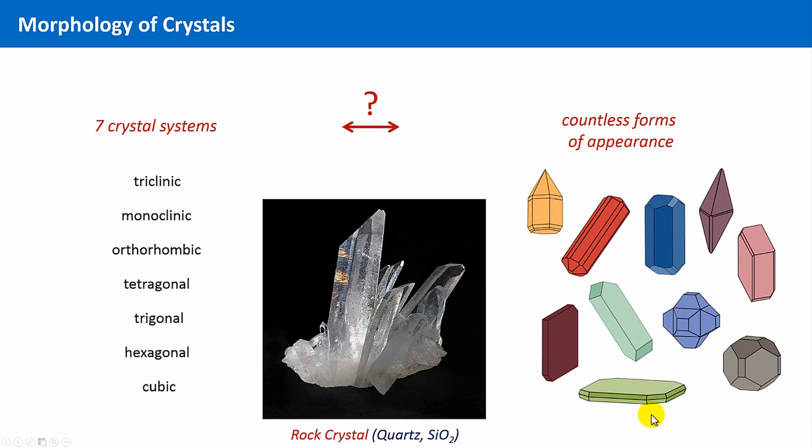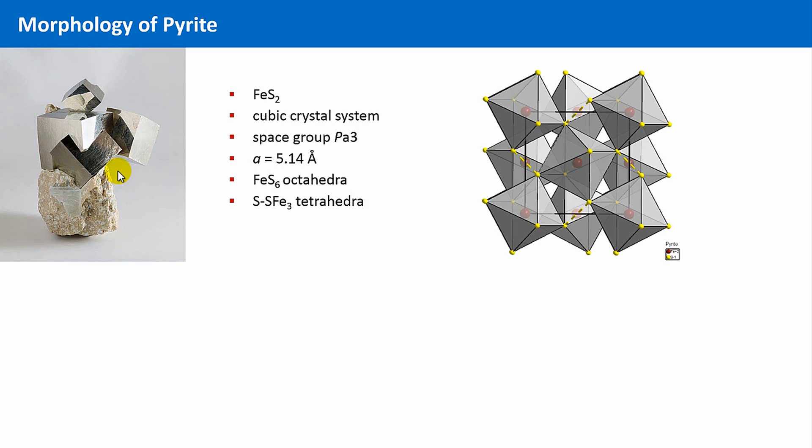Let's have a look at the following example. Here you see a lovely, shiny specimen of an aggregate of pyrite crystals. Some of them are intergrown, but you can clearly see the dominant cubic shapes. The cubic shape is the most prominent morphology of pyrite. And this is no surprise, because pyrite crystallizes indeed in the cubic crystal system.